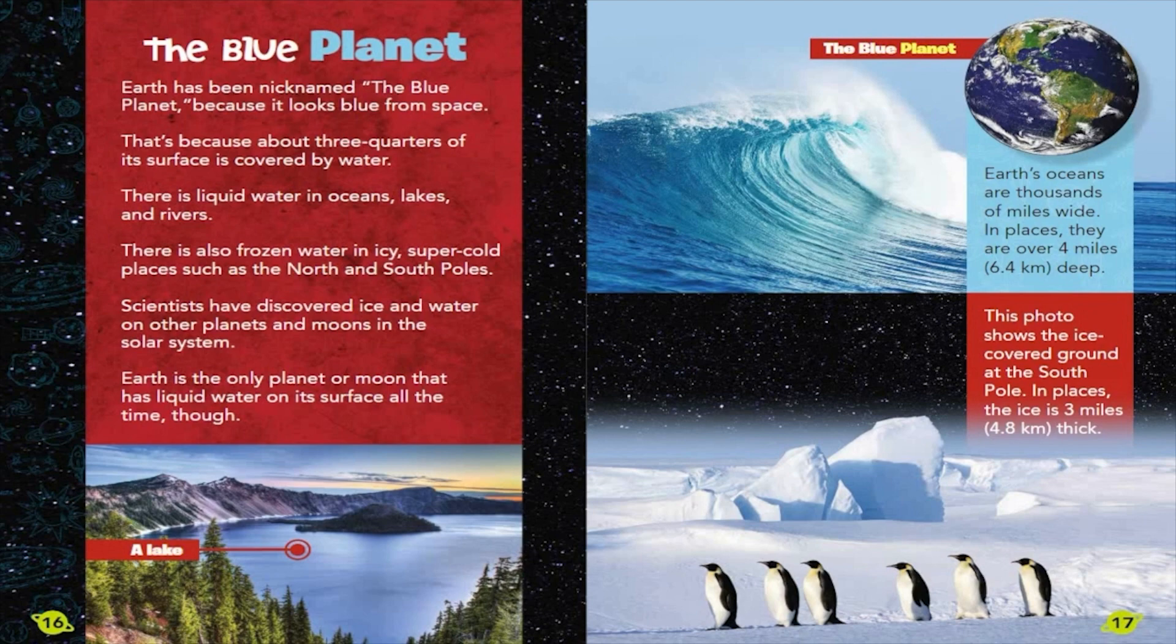Scientists have discovered ice and water on other planets and moons in the solar system. Earth is the only planet or moon that has liquid water on its surface all the time, though. Earth's oceans are thousands of miles wide. In places, they are over 4 miles, 6.4 kilometers deep. This photo shows the ice-covered ground at the South Pole. In places, the ice is 3 miles, 4.8 kilometers thick.